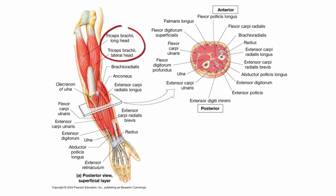The triceps brachii has a long head, which extends the arm and the forearm, and then the lateral and medial head extends the forearm. The anconeus, as mentioned before, also extends the forearm.